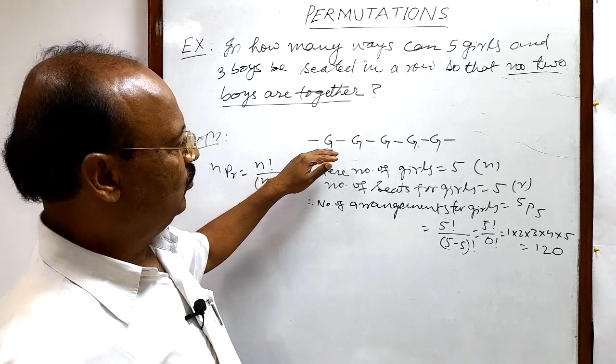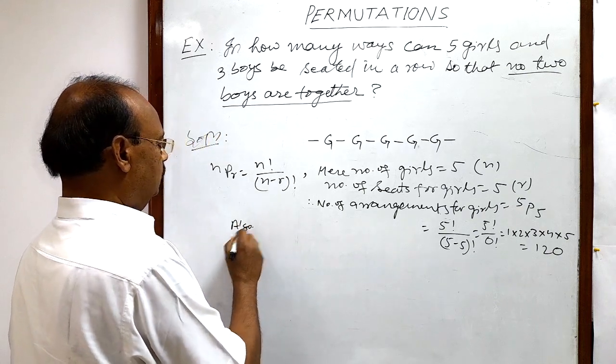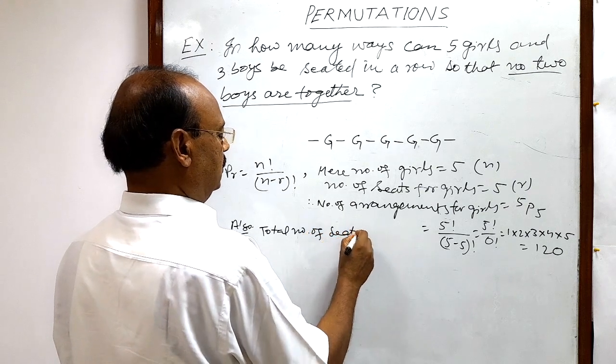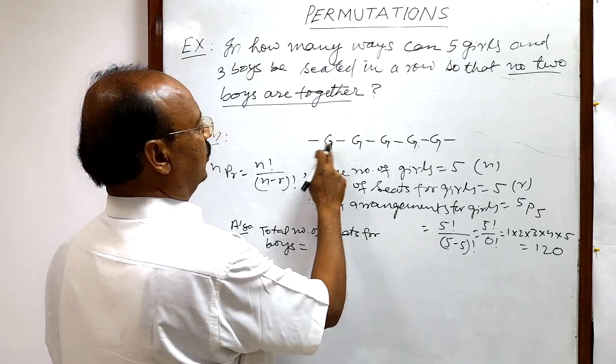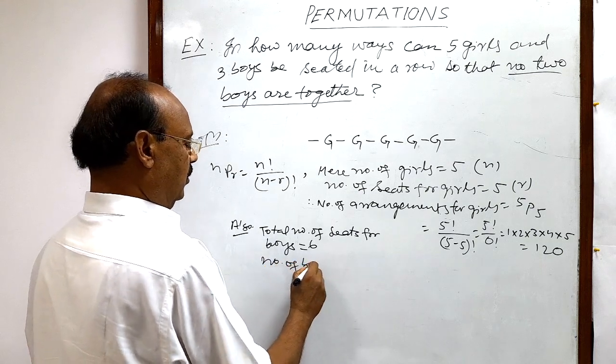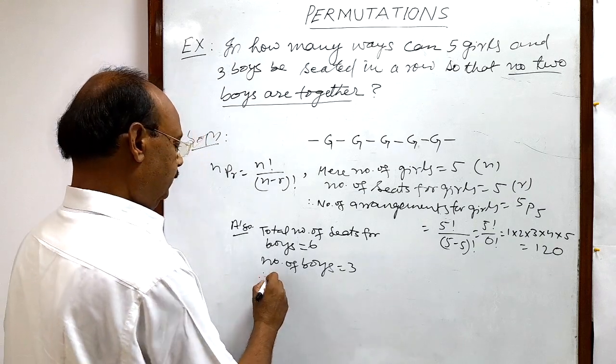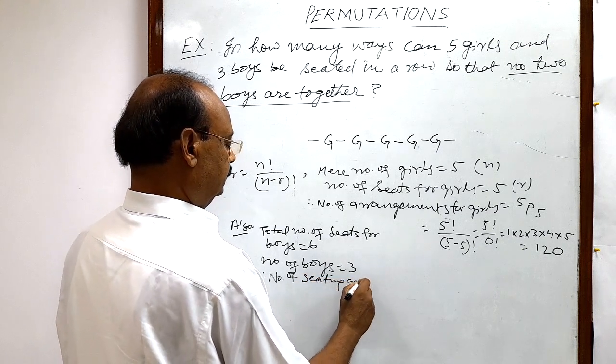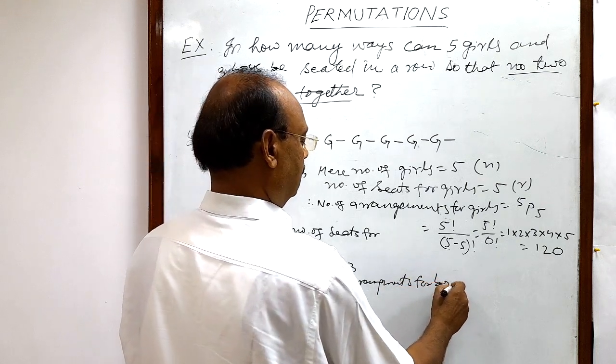Now let us discuss the possibilities for boys also. Total number of seats for boys, how many? One, two, three, four, five, six. And number of boys, how many? Three.